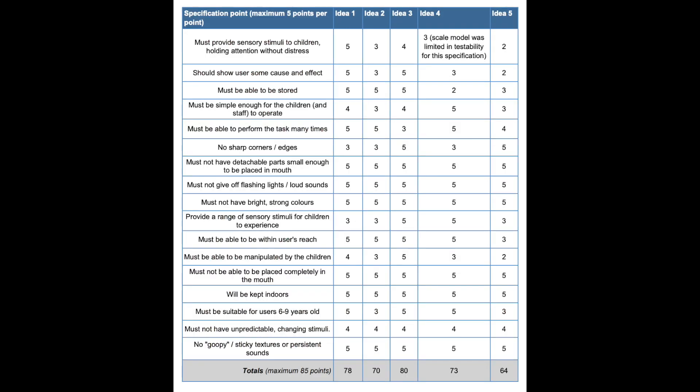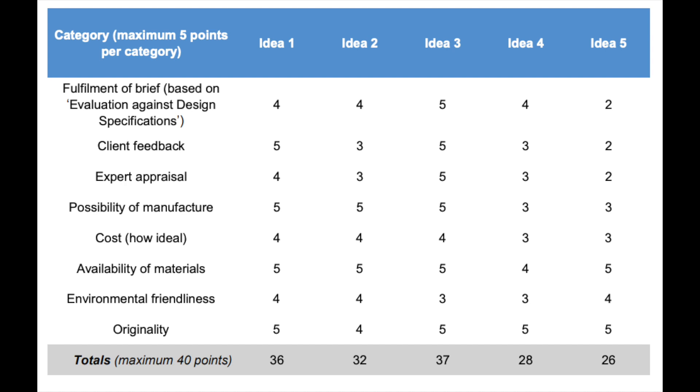At some point towards the end of your initial design ideas and iteration process, it's a good idea to develop an evaluation table that shows the design specifications and a rating system to show which of your ideas are meeting the design specifications the best. This is just an example — a title would improve it, but it gives you an idea of what to consider. Another example of an evaluation table considers client feedback, expert appraisal, possibility of manufacturing, cost, and so on.